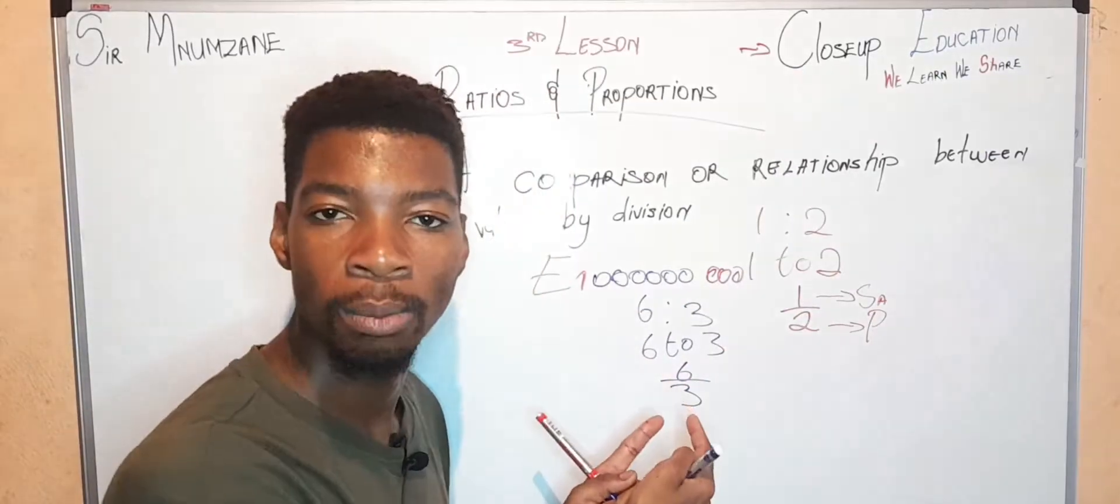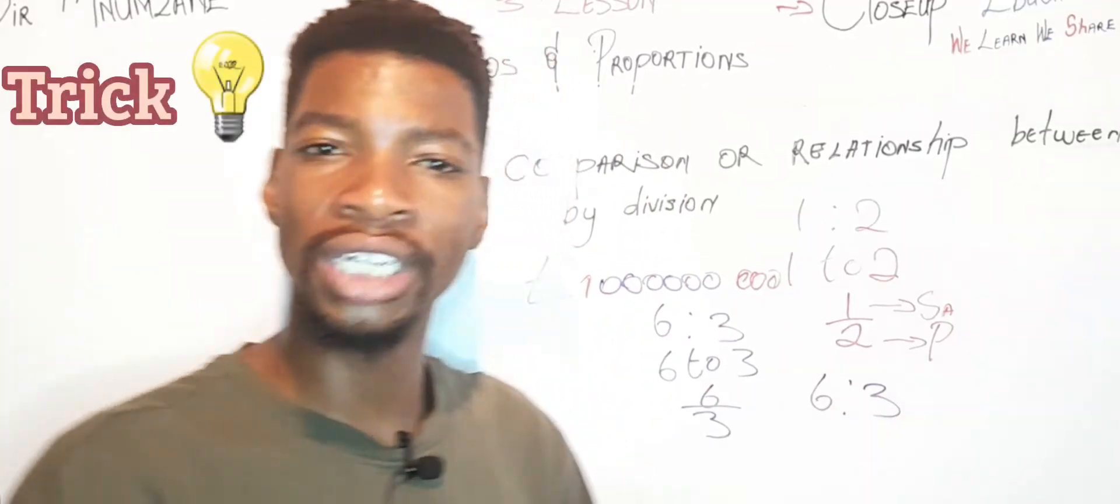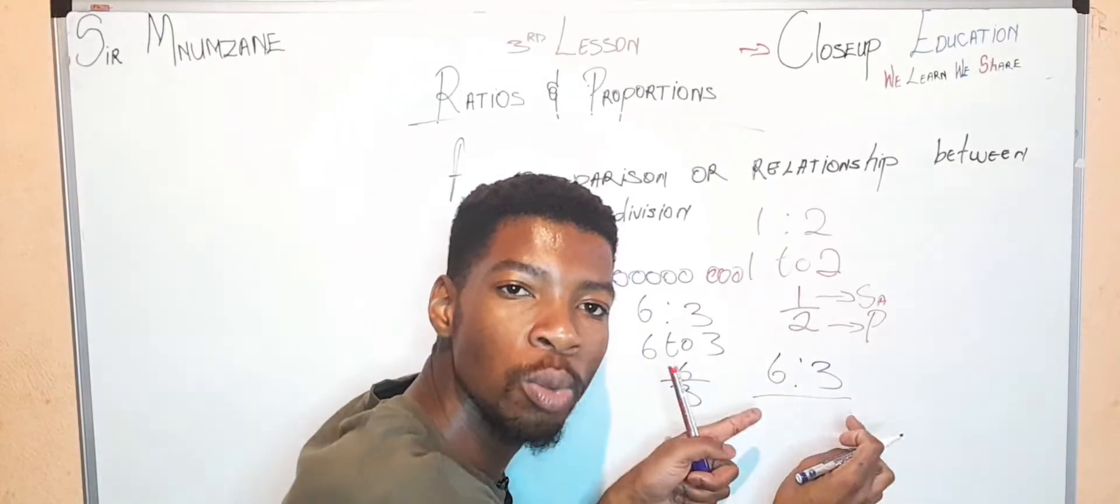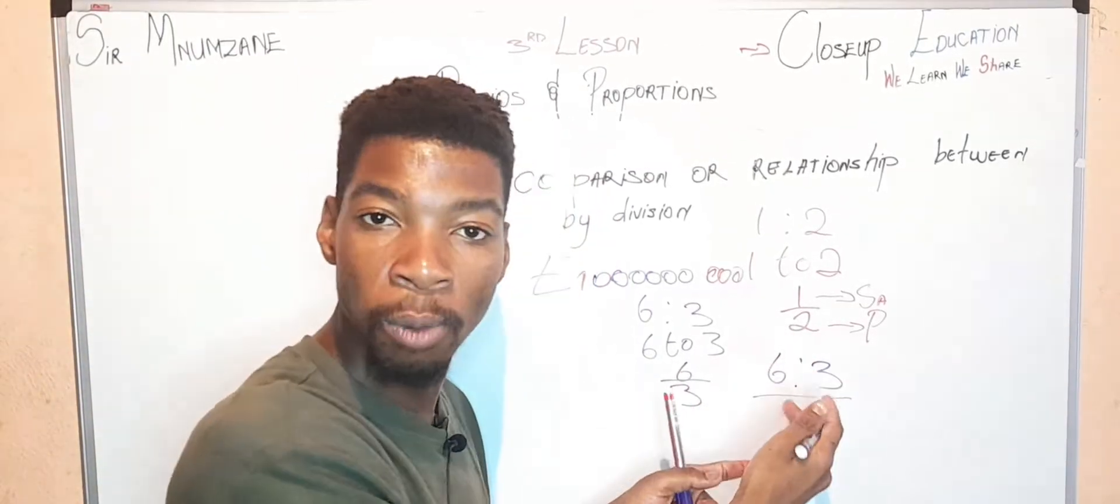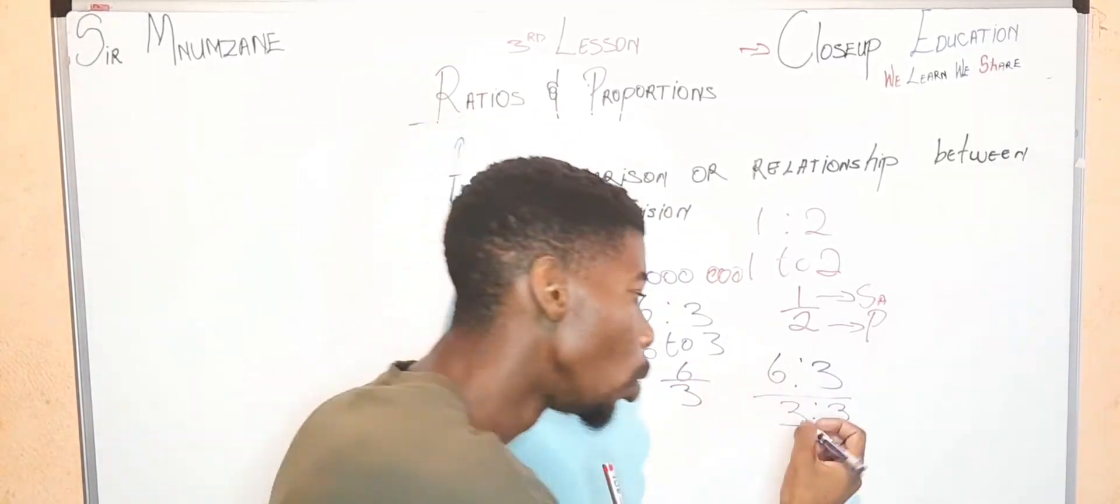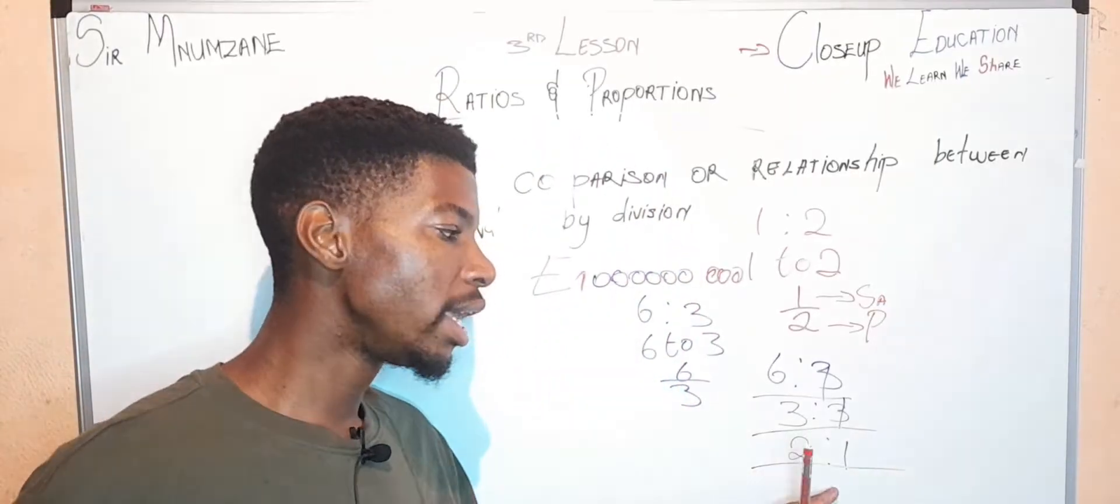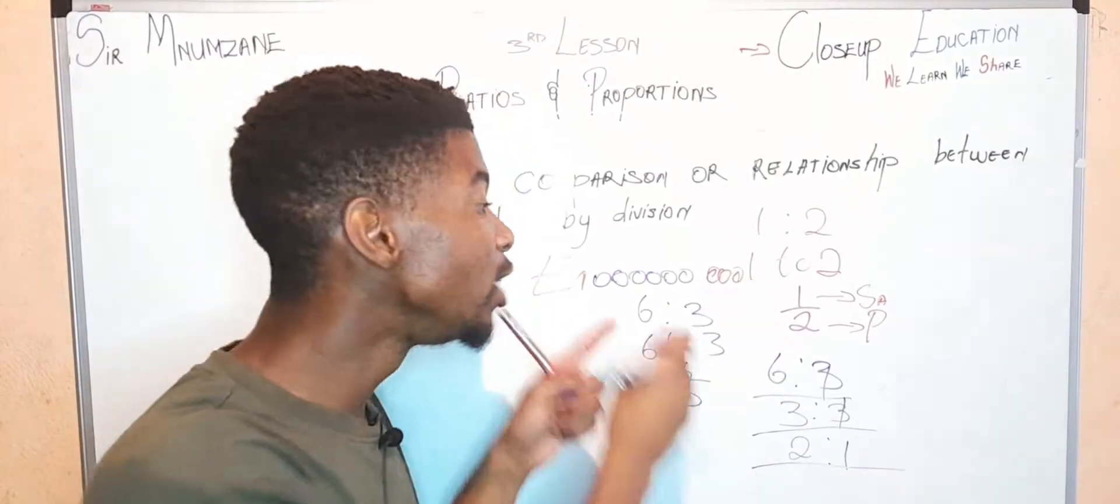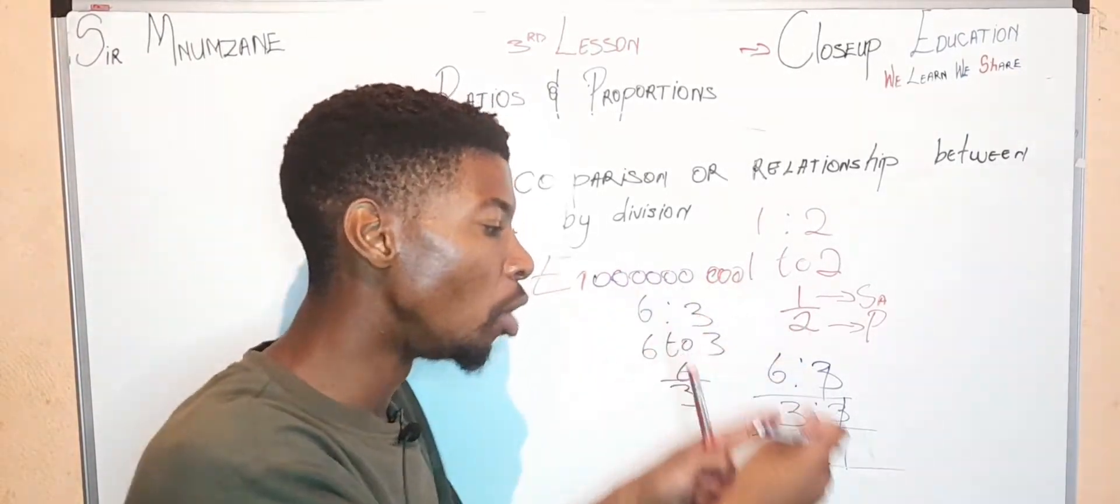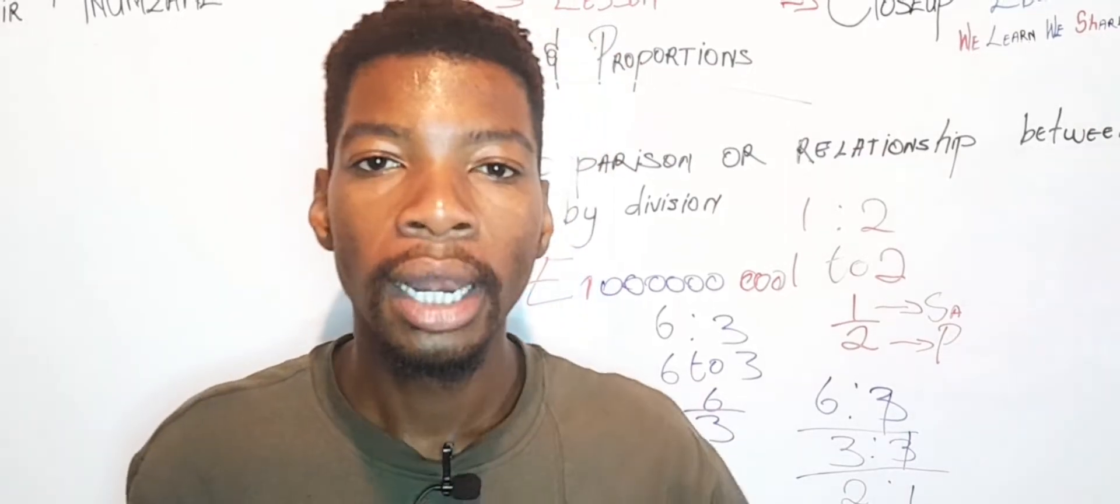How do you simplify this problem? You say 6:3. The trick around ratios is to always divide or multiply with the same value. Our same value will be 3. We'll be dividing both numbers by 3. So 6 divided by 3 is 2, and 3 divided by 3 is 1. What is our answer? 2:1, meaning for two oranges we will find one apple.